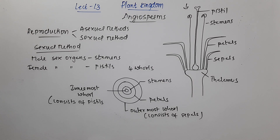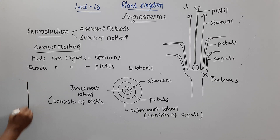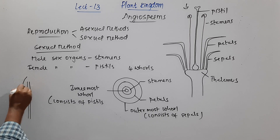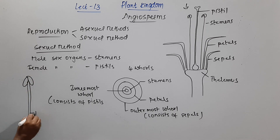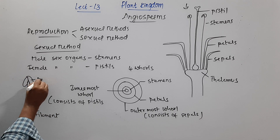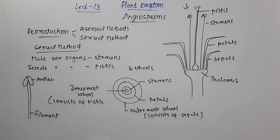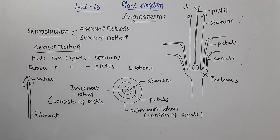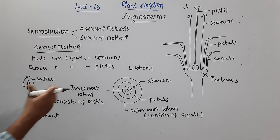The structure of the stamen consists of a filament and an anther — a long filament and the anther at the top. Inside the anther there will be development of pollen grains.